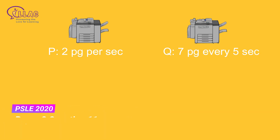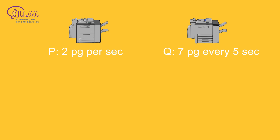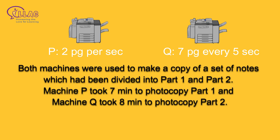The photocopying rates of two machines, P and Q, are as shown. Machine P can print 2 pages per second. Machine Q can print 7 pages every 5 seconds.